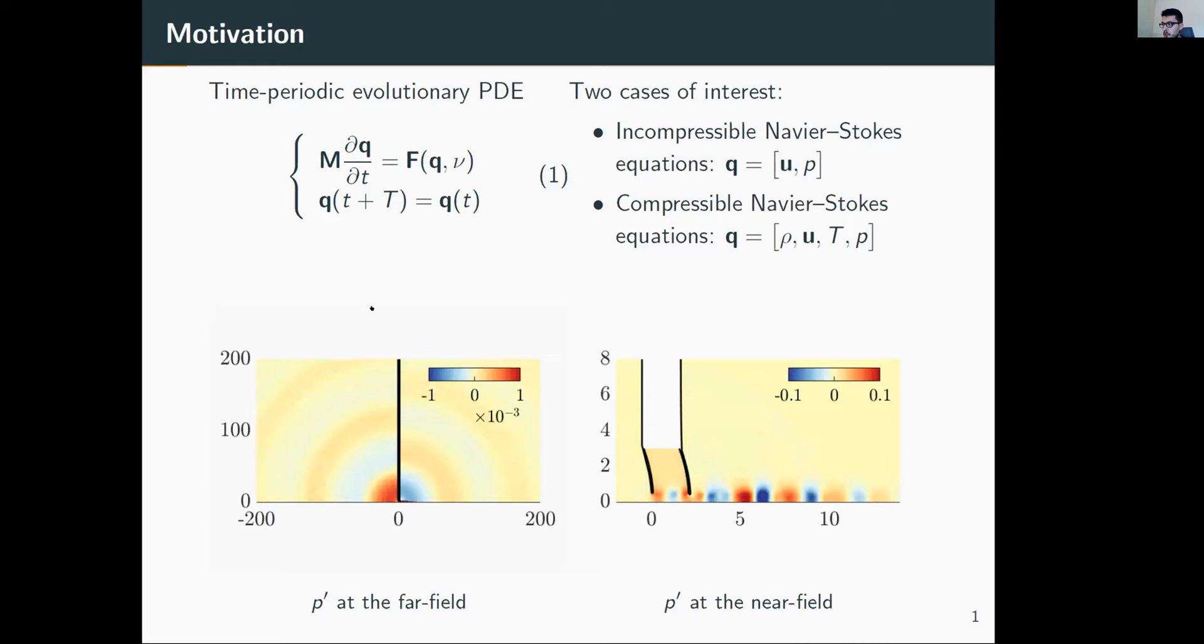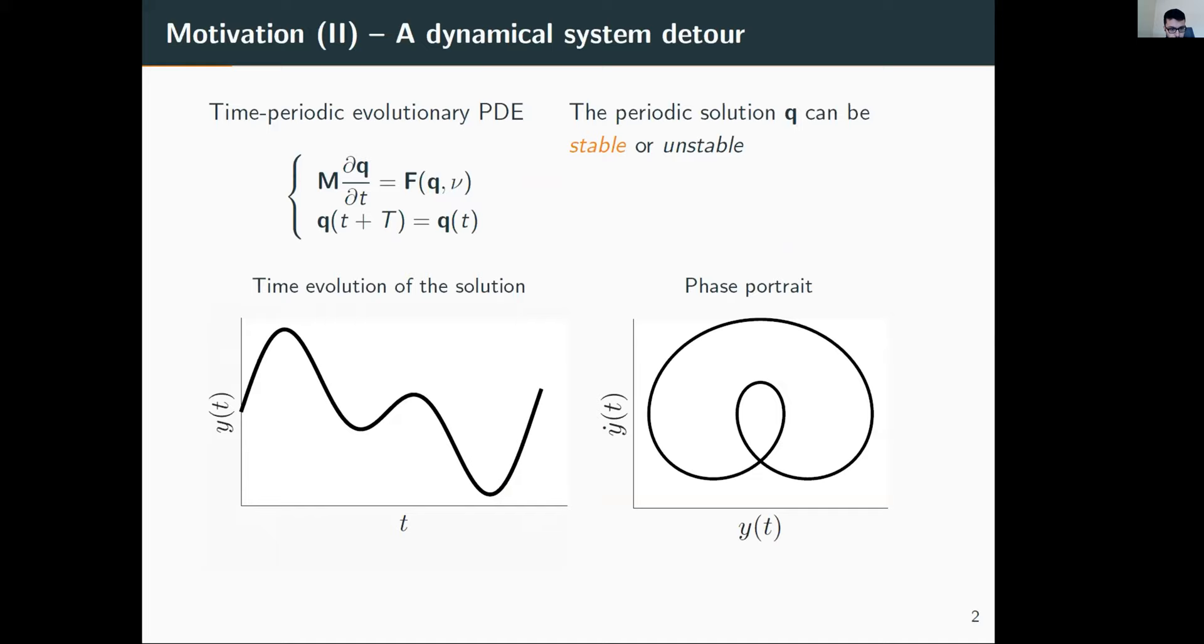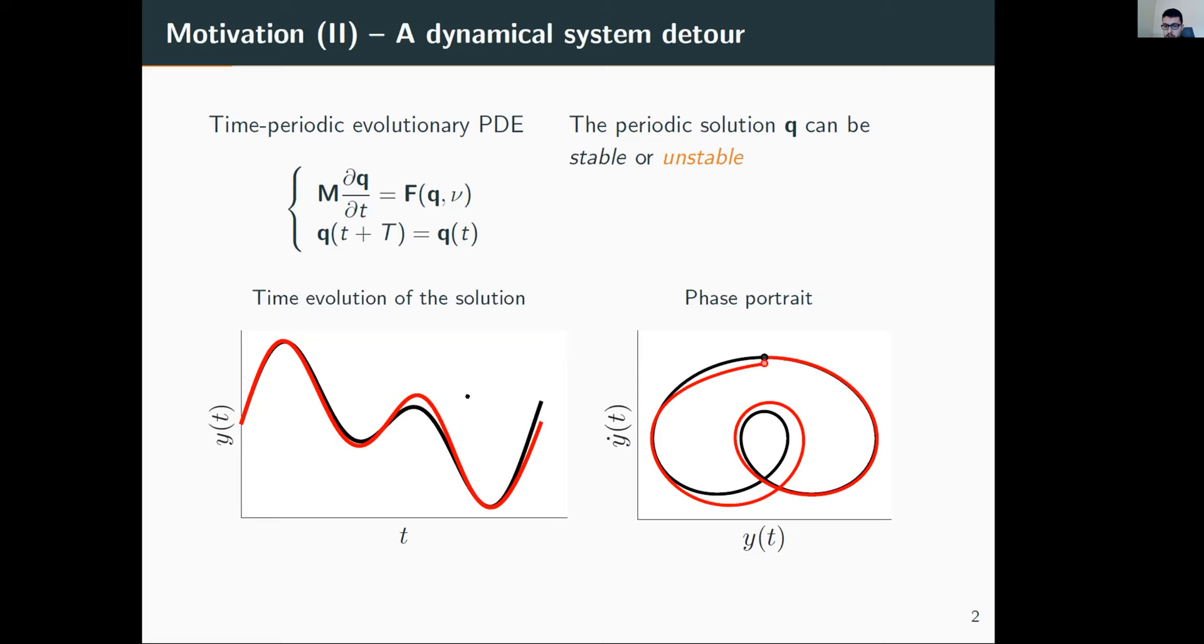In this case, the periodic solution can be stable or unstable. Several periodic orbits are also of interest. To illustrate what I mean, for instance, we can consider a periodic solution that is stable if we start by this red dot and converge towards the limit cycle, whereas it's unstable if we go the other way around.